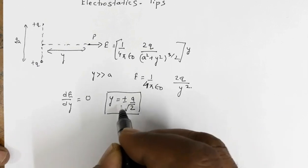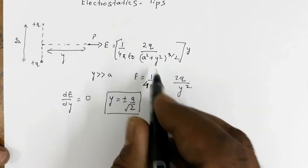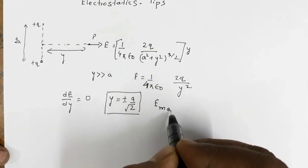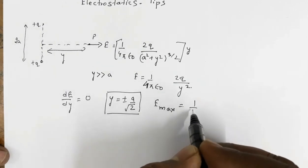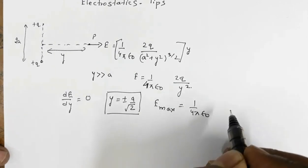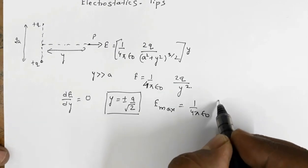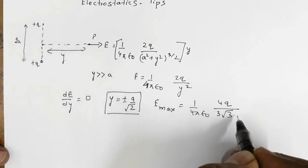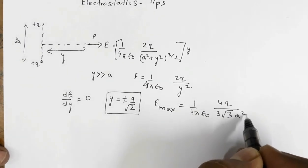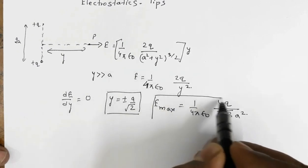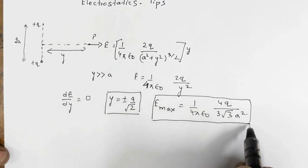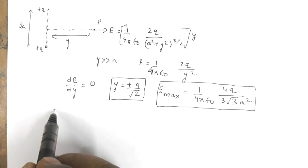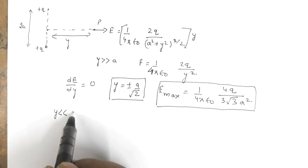If you substitute this value of y, you'll get the maximum value of electric field: E_max = (1/4πε₀) × 4q / (3√3 × a²). This is the value of the maximum electric field. Now in case y is very much smaller than a...